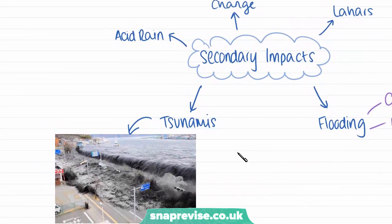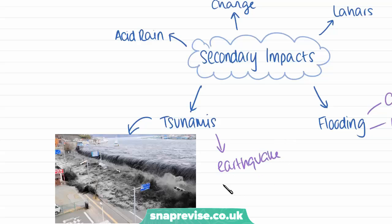Another secondary impact is tsunamis. Volcanic events are often associated with earthquakes, and when a volcano is erupting, earthquakes can happen at the same time. When these happen under the sea, tsunamis can be formed — these are huge waves, and when they crash onto land they can cause massive disasters and damage. This image shows the Japanese tsunami, which was not caused by a volcano but by an underwater earthquake off the coast of Japan; however, an earthquake from a volcano would have very similar effects on nearby land.